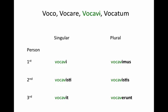Our endings are: i, isti, it, imus, istus, erunt. These are just things you're going to have to memorize, so get used to seeing these. It's the first person singular wokawi, second person singular wokawisti, third person singular wokawwit, first person plural wokawwimus, second person plural wokawwistus, third person plural wokawwerunt.